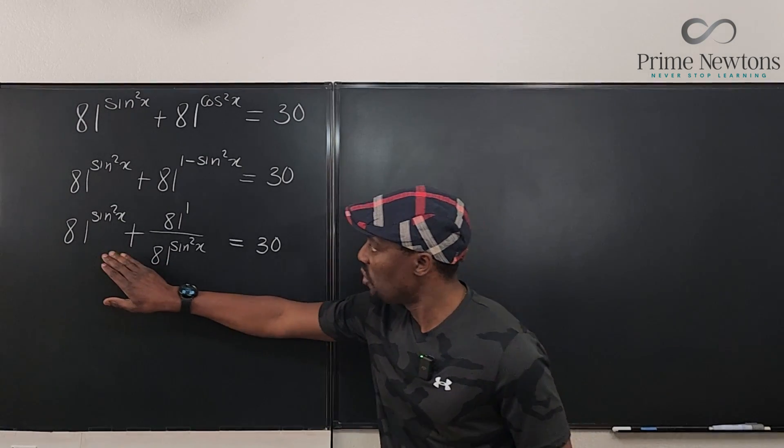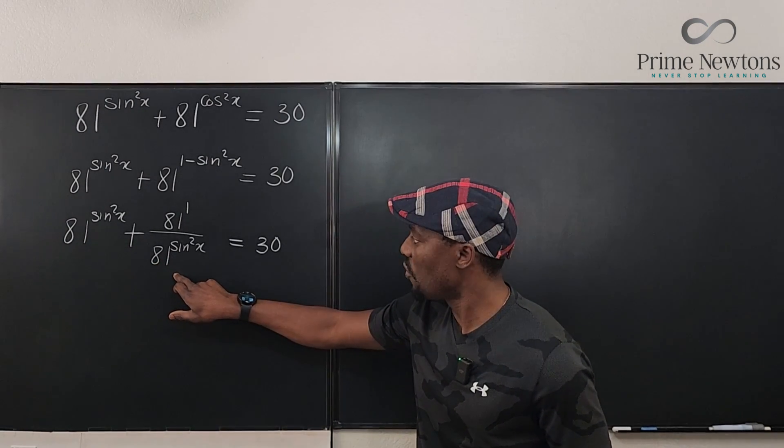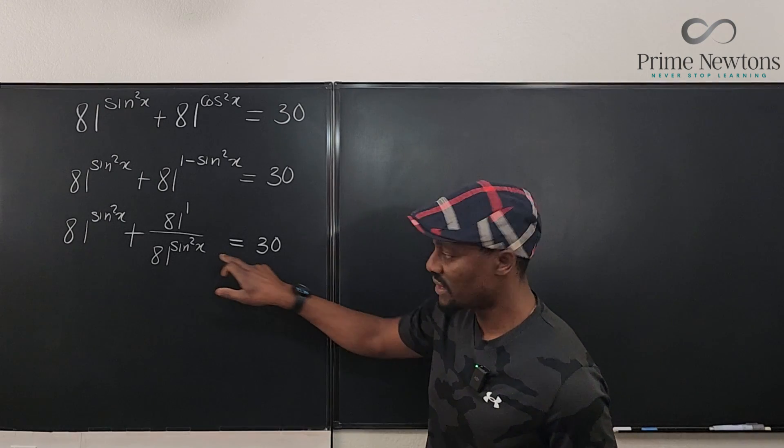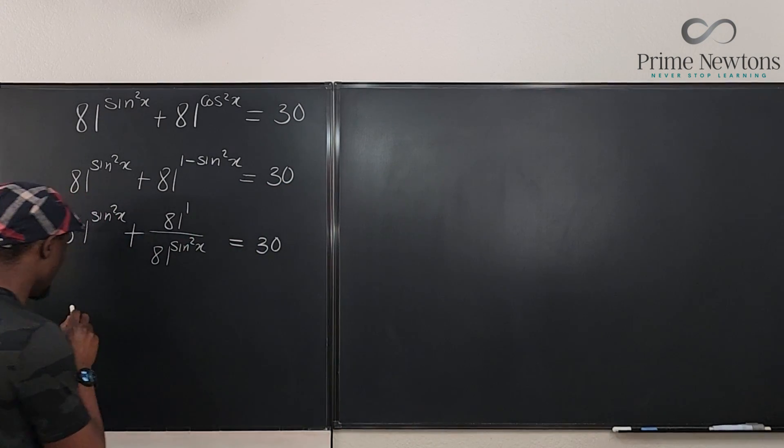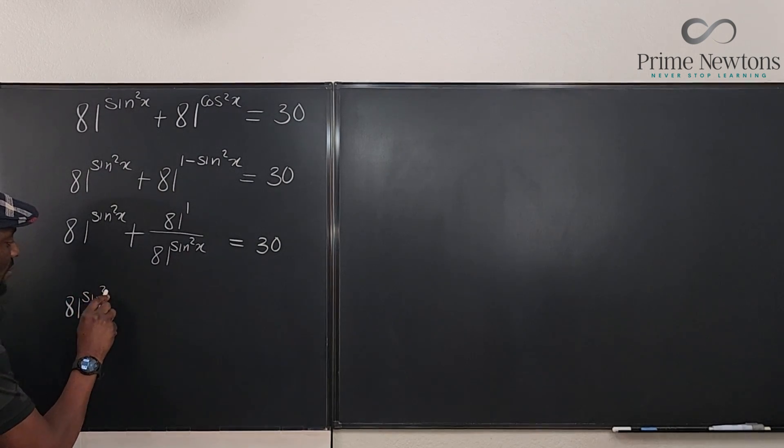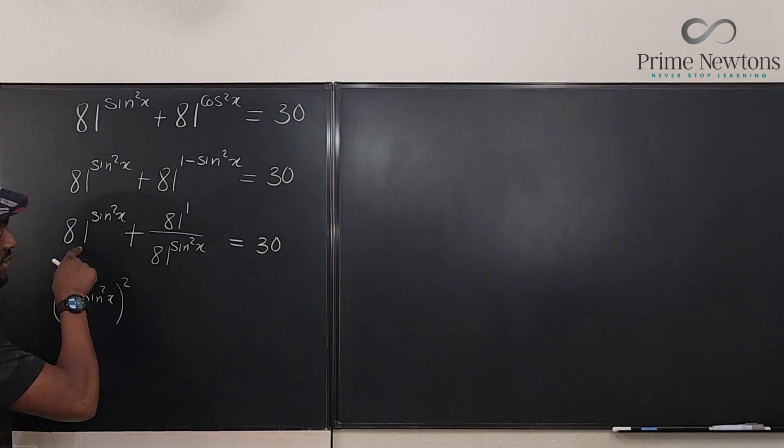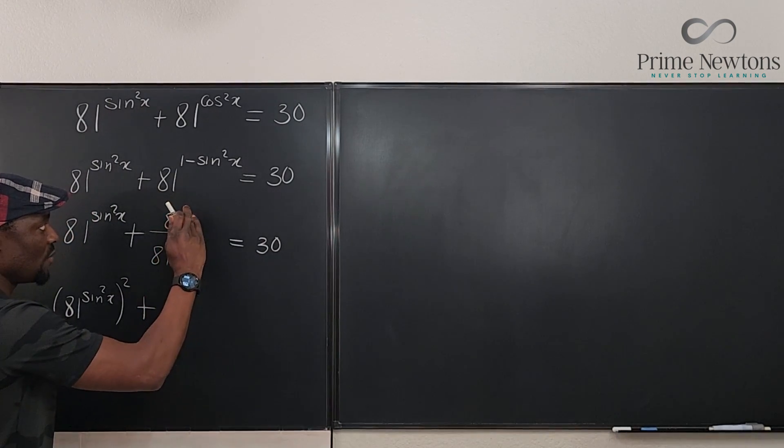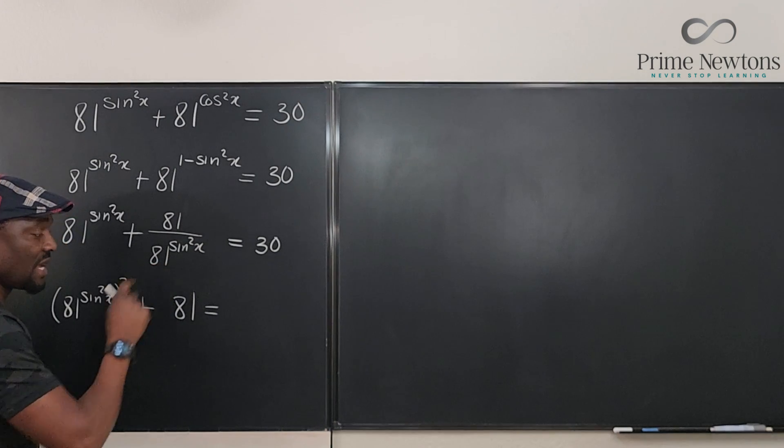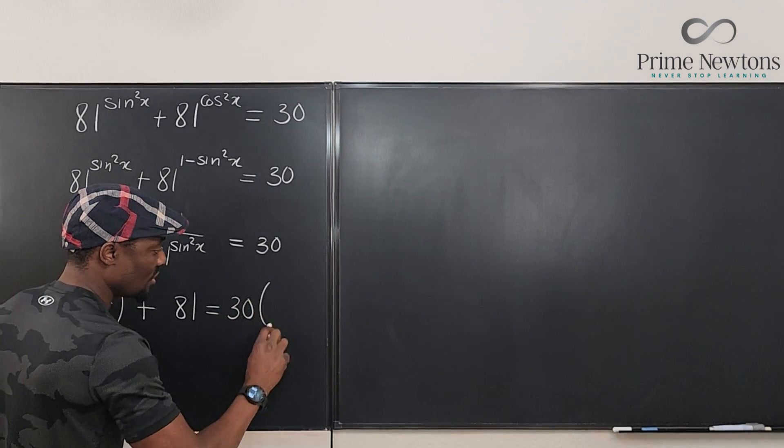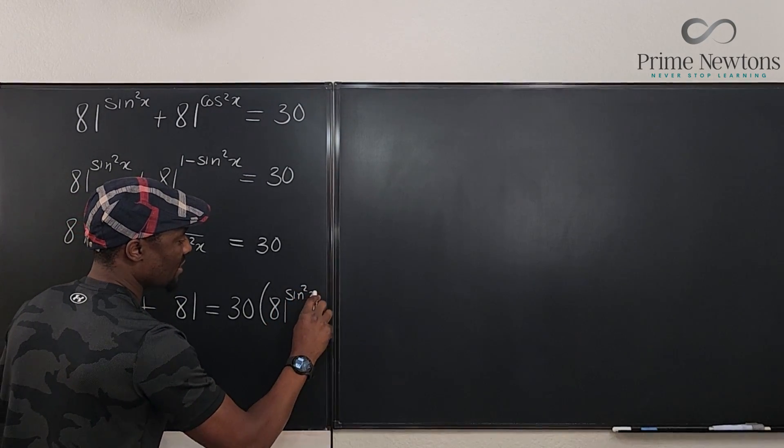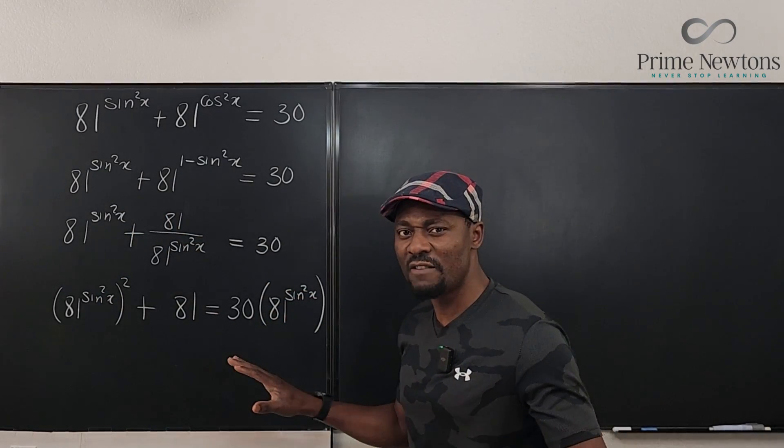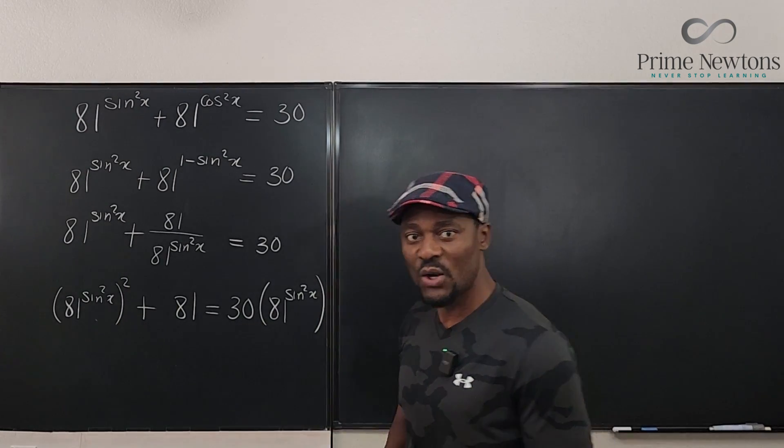So what happens? If I want to get rid of this fraction, I can multiply each term by 81 sine squared x. If I multiply this by 81 sine squared x, multiply this by 81 sine squared x, the same thing here. This is what happens. Ultimately, this becomes 81 sine squared x squared, because I'm going to use this to multiply it. Plus, if I multiply this by itself, I'm going to just have 81 to the first power, which is just 81. And on the right-hand side, I'll be multiplying by 81 sine squared x, which is going to be 30 times 81 raised to power sine squared x. What do you see? I see 81 sine squared x squared here, I see it here. What if I try to save myself and represent this as t? Represent this as t. Look at what happens.